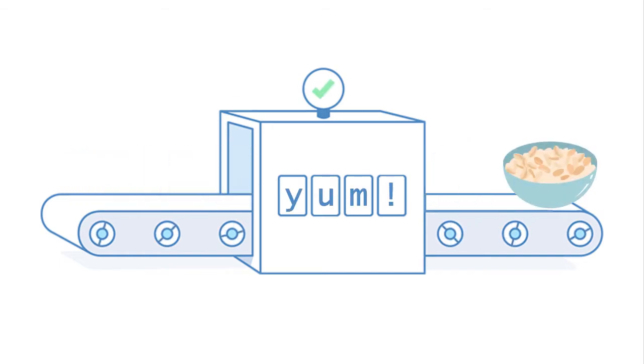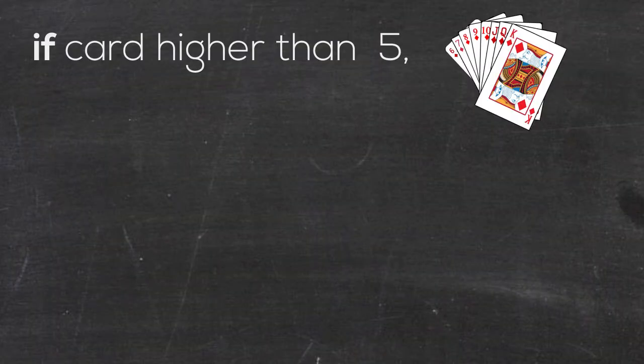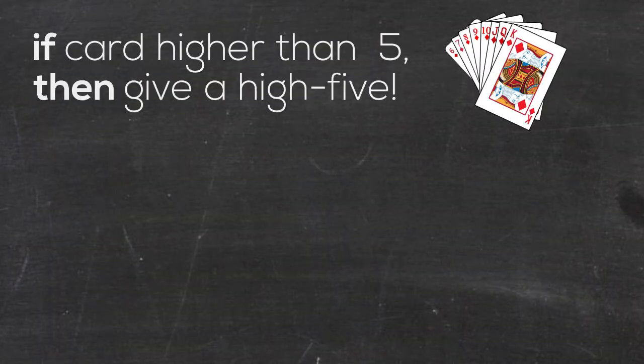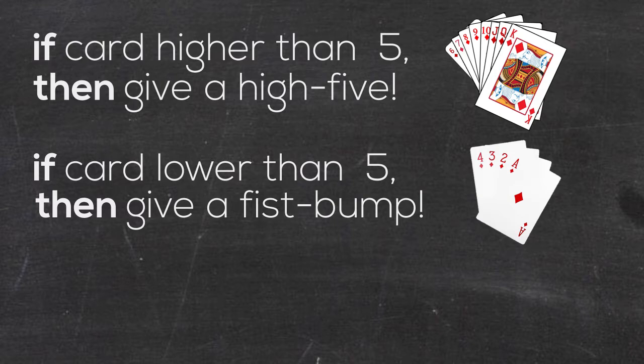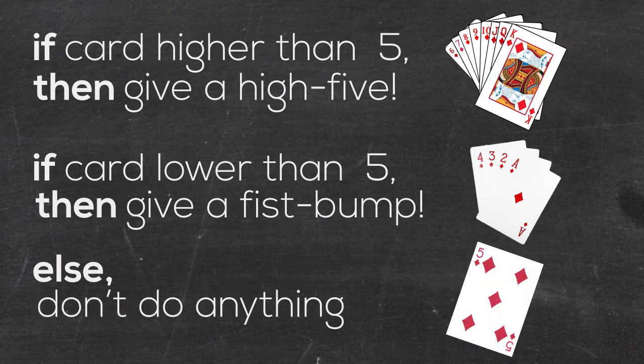I'm going to demonstrate this with a little card game. I have a deck of playing cards and I'm going to give my brother Seth a card and I'm going to have one card for myself. We're going to phrase the if statement like this: if the card is higher than a five, then you're going to give the other person a high five. If the card is lower than a five, then you're going to give the person a fist bump. Otherwise, don't do anything.